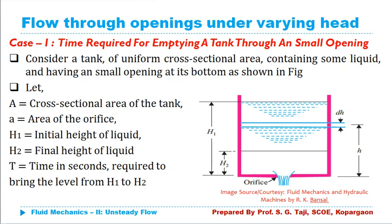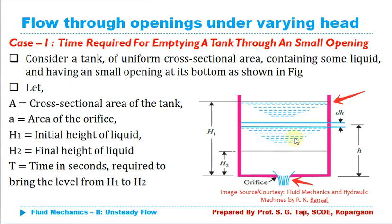We have considered two different cases. In case number one, we are considering a tank having uniform area of cross section — meaning the area of cross section of the tank does not change with respect to the head. In case number two, this area is also variable, which may be like a hemispherical tank where the area goes on decreasing towards the decreasing head.